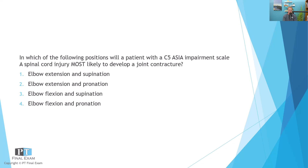The question is: in which of the following positions will a patient with a C5 ASIA Impairment Scale A spinal cord injury most likely develop a joint contracture? We're talking about a complete spinal cord injury, indicating there is no sacral segment sparing — no sensory in the sacral segments S4 and S5. When we identify the neurological level for a spinal cord injury, it is the lowest functioning level, meaning everything below is impaired. You would require more information to know the precise function on each spinal segment below.